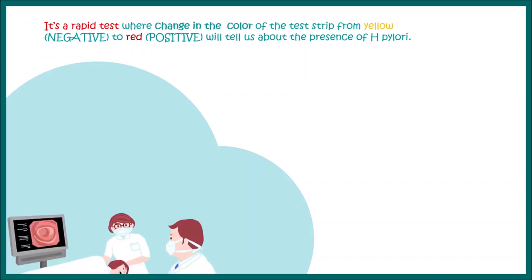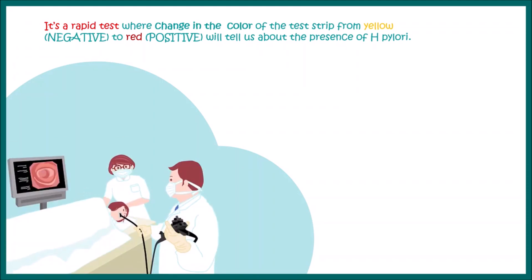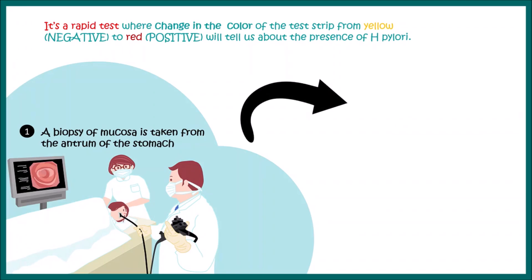First of all, your doctor using endoscopy takes out a small portion or biopsy of your mucosa from your stomach, and then it is transferred to a test strip. In this test strip, there is a zone which forms a color.